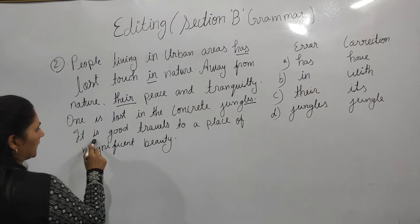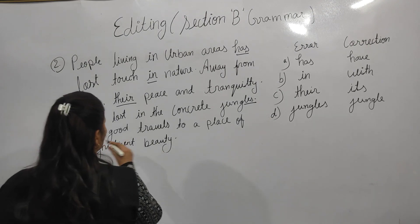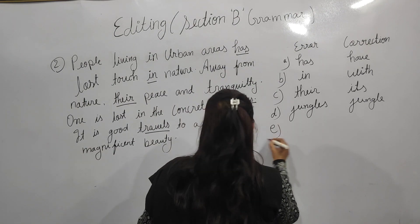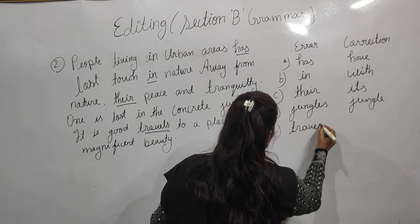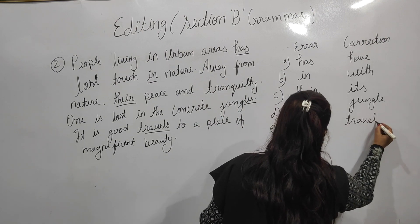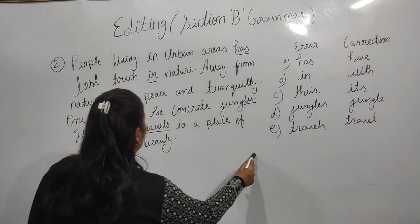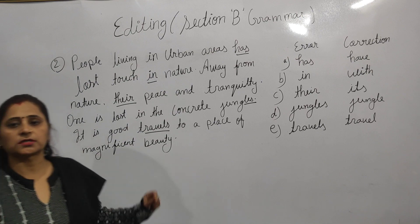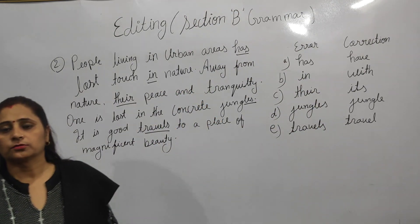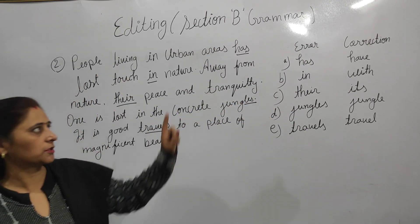It is good travels to a place of magnificent beauty — 'travels' is the error here. The correction is 'travel', not 'travels'. In this way, very easily you can find the error and correction. Your concept should be clear — whatever the topic you are studying, like have and has, singular and plural. Prepare the chapters on subject-verb concord, determiners, and tense to solve editing types of questions in grammar.